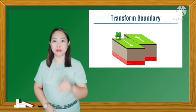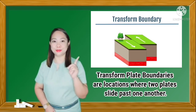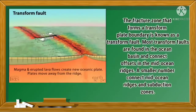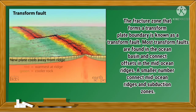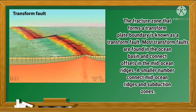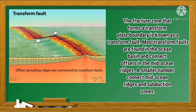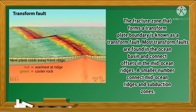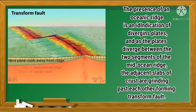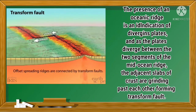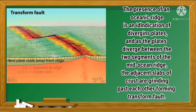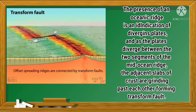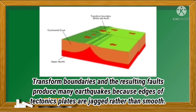And the last is the transform plate boundary. Transform plate boundaries are locations where two plates slide past each other. The fracture zone that forms a transform plate boundary is known as a transform fault. Most transform faults are found in the ocean basin and connect offsets in the mid-ocean ridges. A smaller number connect mid-ocean ridges and subduction zones. The presence of an oceanic ridge is an indication of diverging plates. As the plates diverge between the two segments of the mid-ocean ridge, the adjacent slabs of crust are grinding past each other, forming a transform fault.